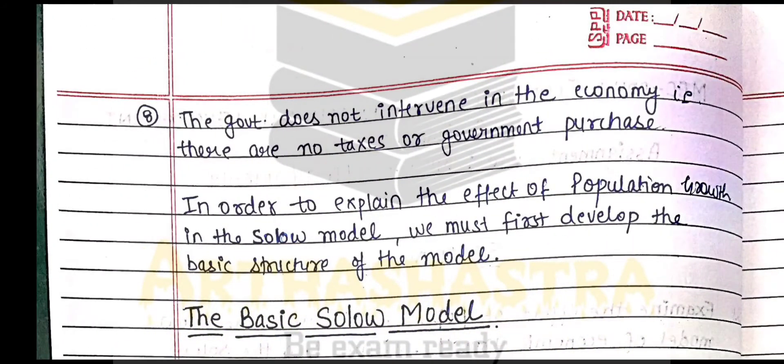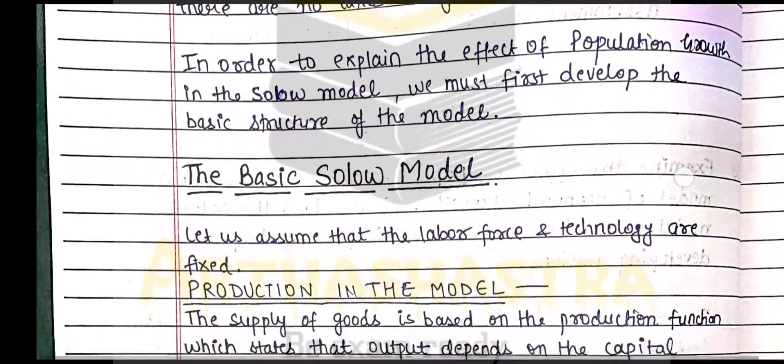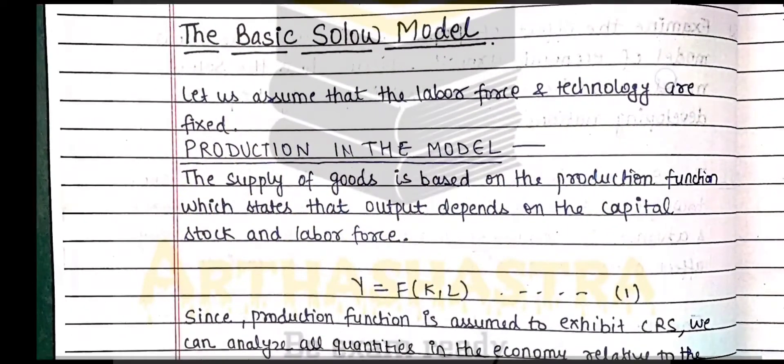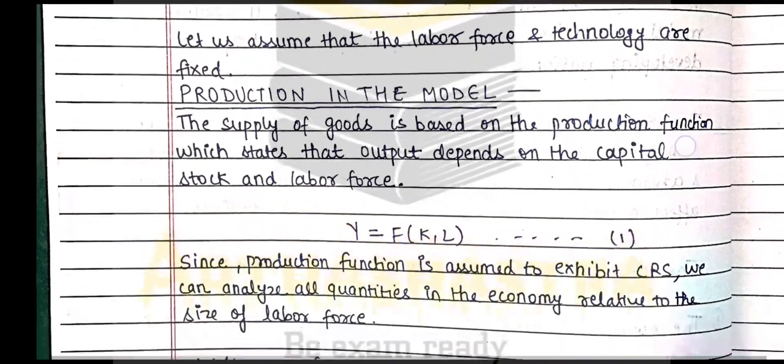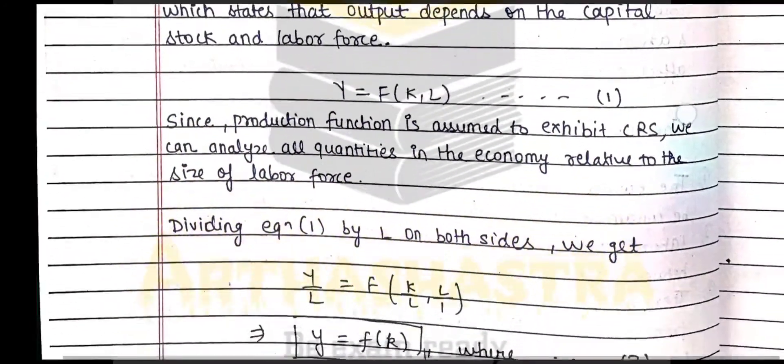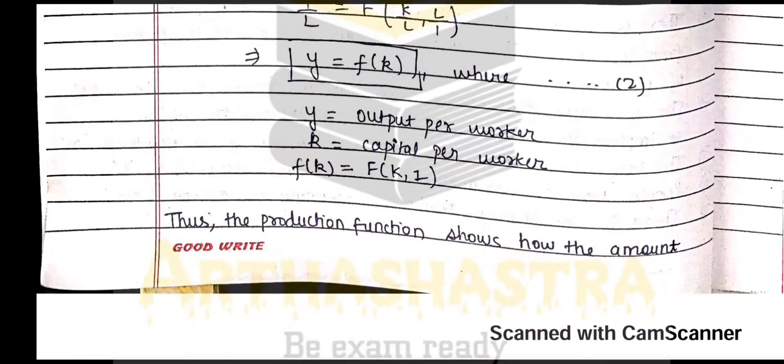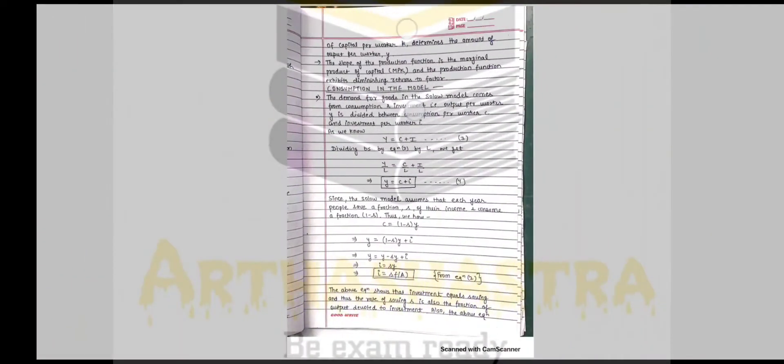Now we are going to explain what the basic Solow model explains. As we know, in an economy there are two sides: the production side and the consumption side. First we're explaining the production side, giving the various important identities which we derive using various notations.